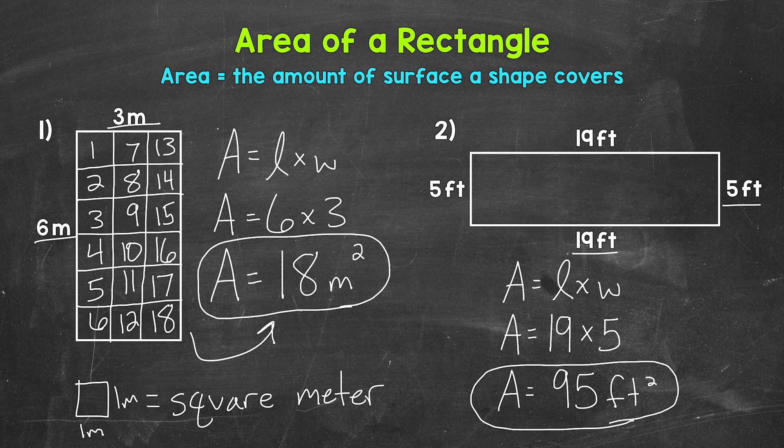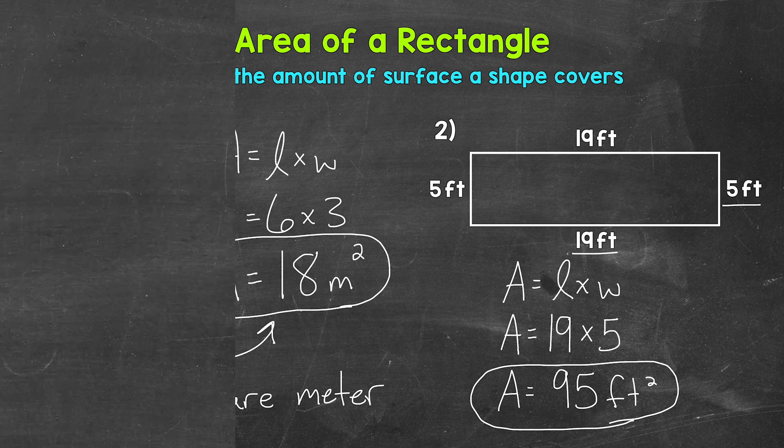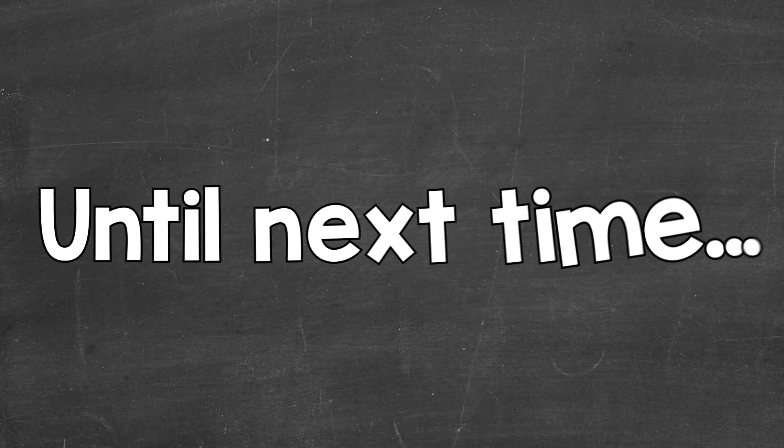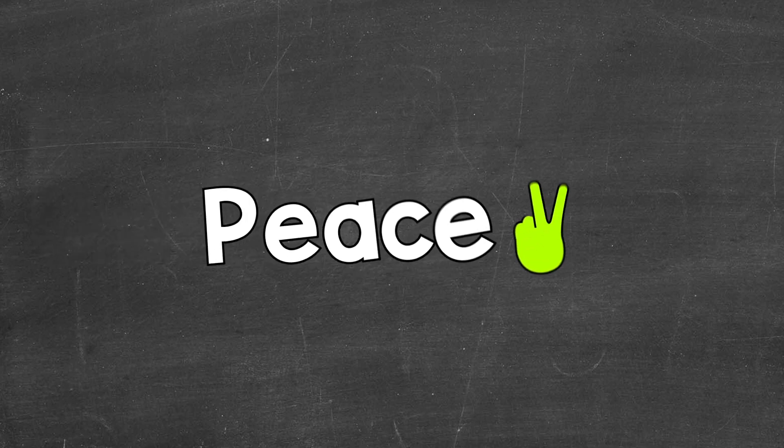So there you have it. There's how to find the area of a rectangle. Area equals length times width. So that's the formula we can use for rectangles. I hope that helped. Thanks so much for watching. Until next time. Peace.